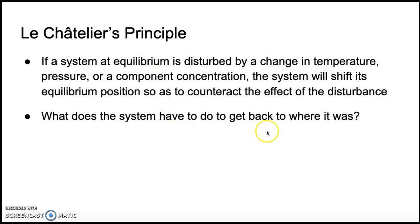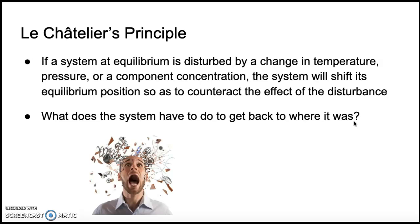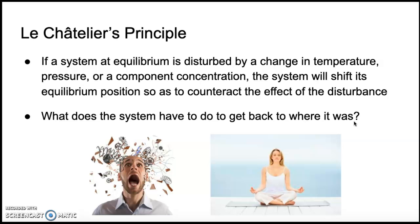So the question is: what does this system have to do to get back to equilibrium? This feels like a timely analogy if we think about what's going on with us not being in school. I don't know about y'all, but I've been feeling sort of off balance this past week — my system's not at equilibrium. Think about what things you have to do to get back to that calm sense where you've got everything under control. The reaction is going to do the same thing — it's going to shift and eventually get back to equilibrium.